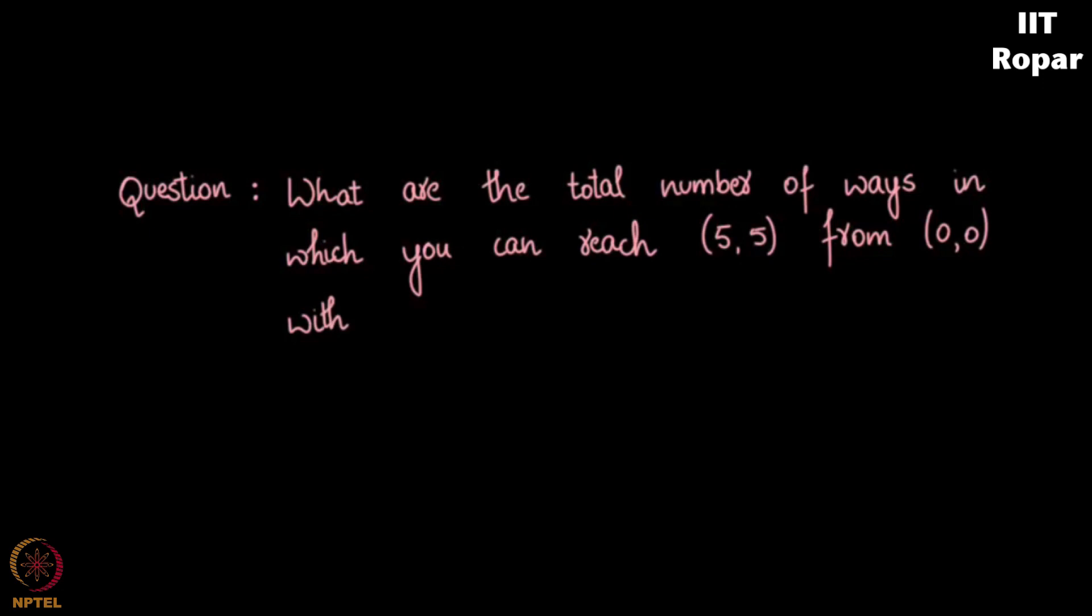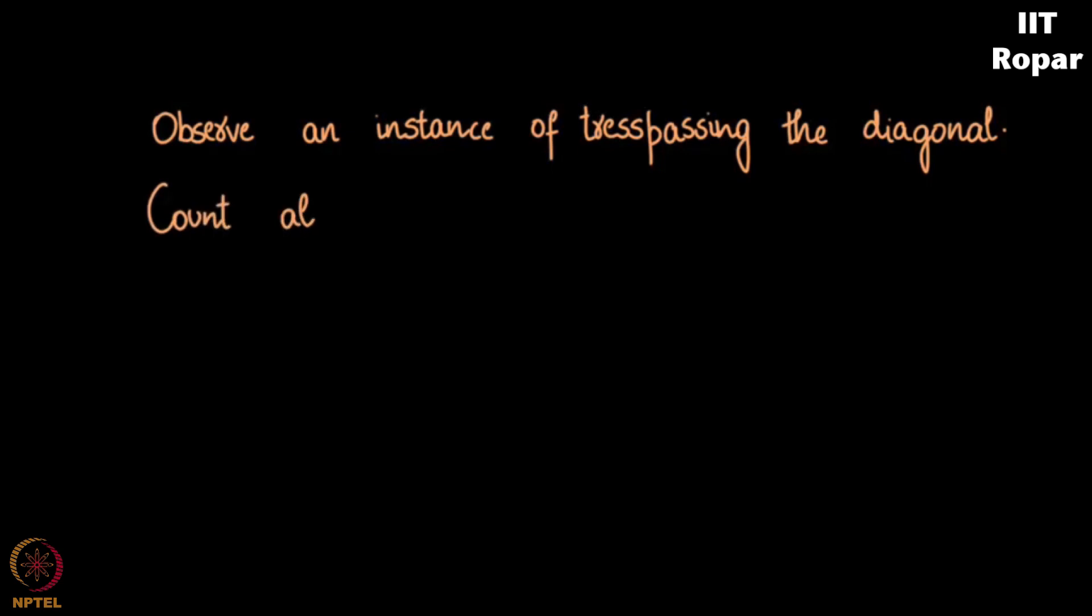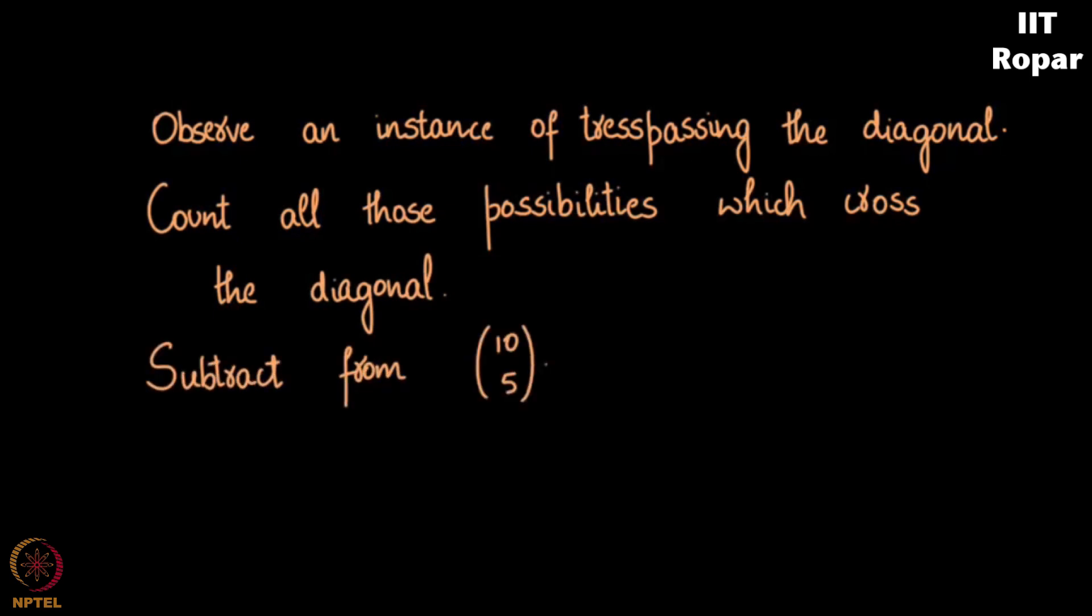What was the question? What are the total number of ways in which you can reach (5,5) from (0,0) without trespassing the diagonal? Let me now observe an instance where I actually trespass the diagonal and I'll count all those possibilities which cross the diagonal and I'll subtract that from all possibilities which is (10 choose 5) and I am done. So all that remains right now is to count the number of ways in which you can trespass the fence. I will start with just one such instance.